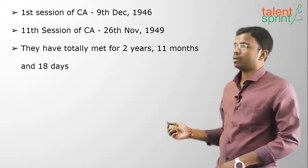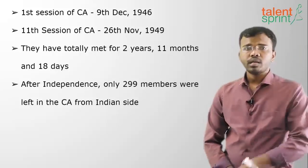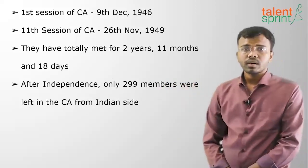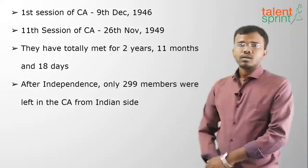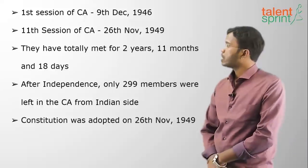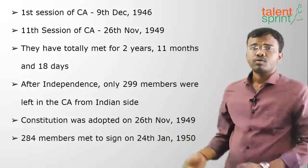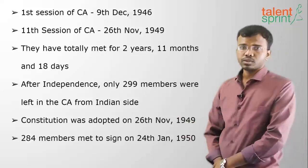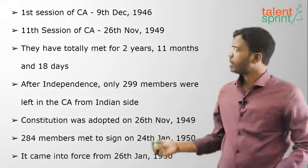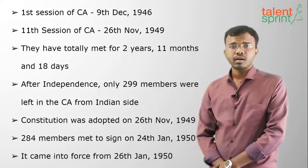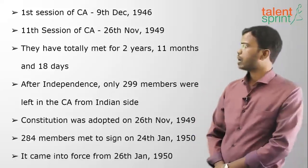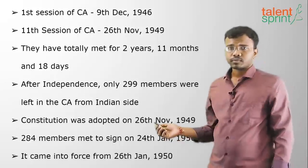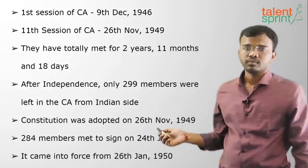After independence, when the country was partitioned on 15th August 1947, only 299 members remained on the Indian side out of the original 389. The Constitution came into force on 26th November 1949. On 24th January 1950, 284 of those 299 members gathered to sign the Constitution, and on 26th January 1950 the Constitution of India came into force, making India a republic.